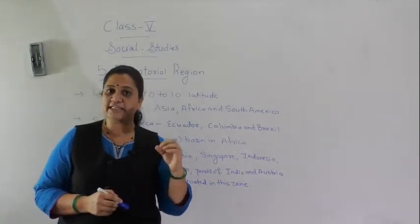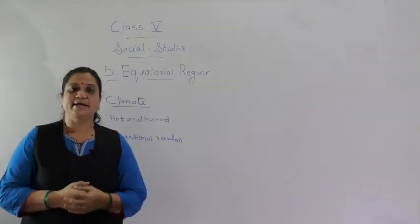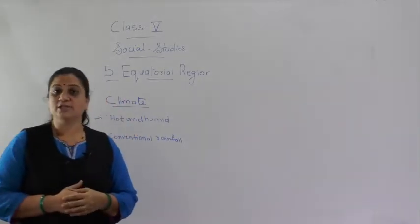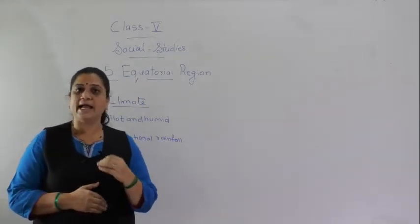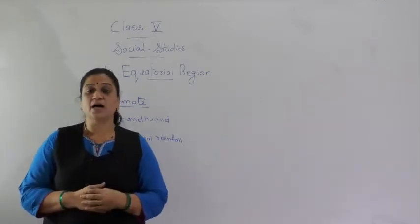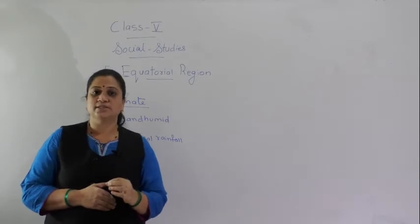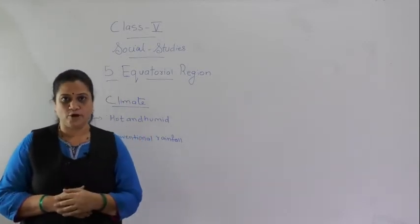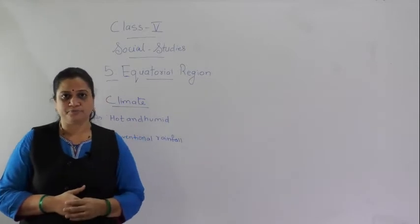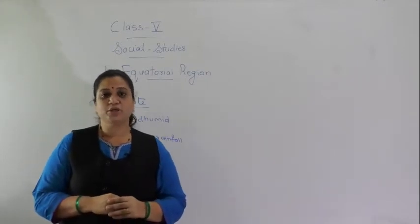Now let us see how the climate is in the equatorial region. As this region falls in the torrid zone, it is extremely hot and humid throughout the year, experiencing equal days and nights. The harsh rays of the sun heat up the land and cause constant evaporation from water bodies. The equatorial region also experiences high humidity and heavy rainfall. That is why this region is also known as the hot wet land.